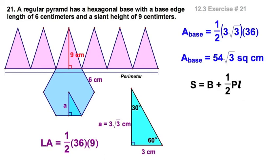Just a reminder, surface area is area of the base, that's capital B, plus one-half perimeter times the slant height. That's this part of the expression over here. We can just substitute the base right here, 54 radical three, and one-half times 36 times nine.